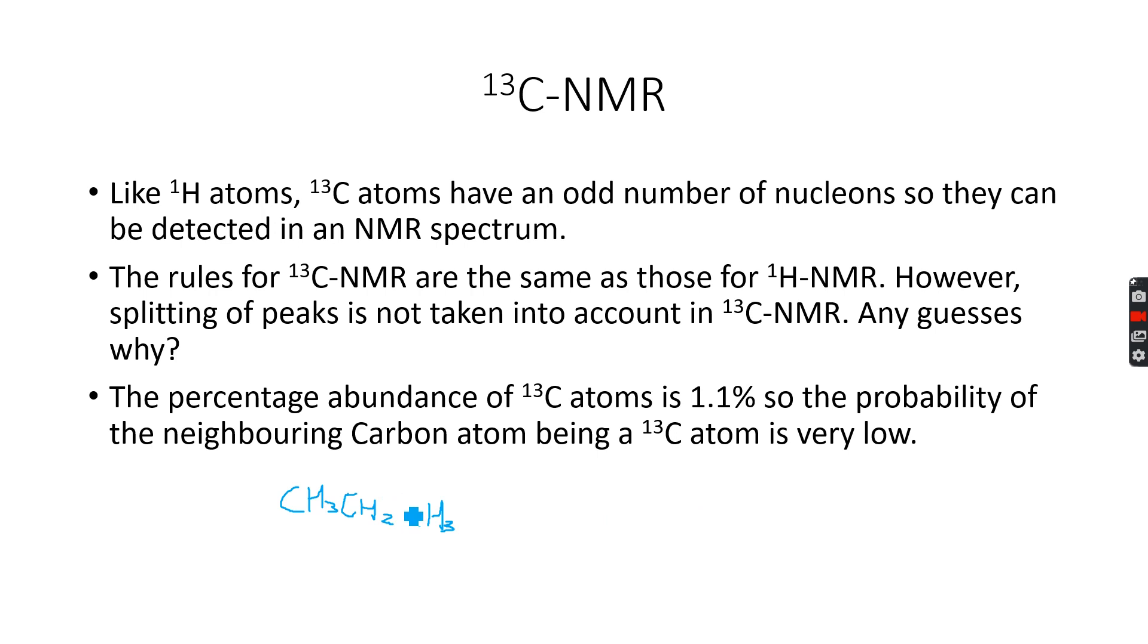For example, if this is a carbon-13 atom, the probability that even this is a carbon-13 atom is very low because the percentage abundance of carbon-12 atoms is the greatest. Carbon-12 cannot be detected by the spectrum because it has an even number of nucleons.